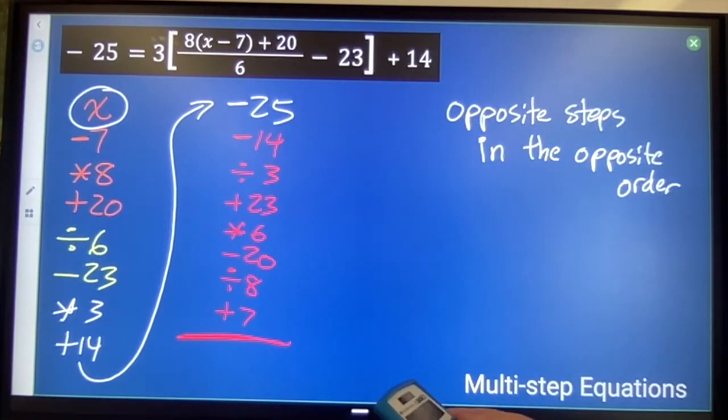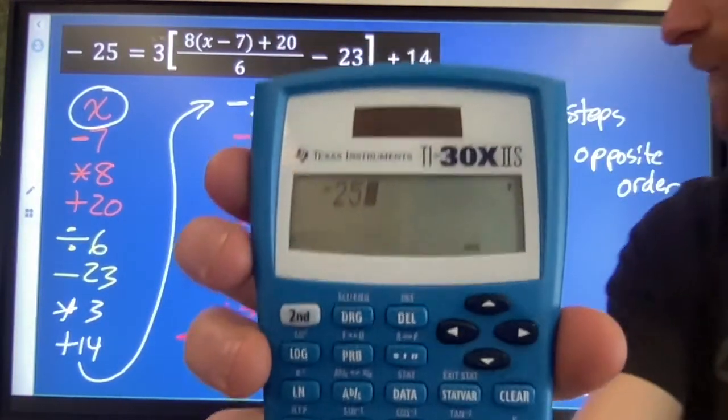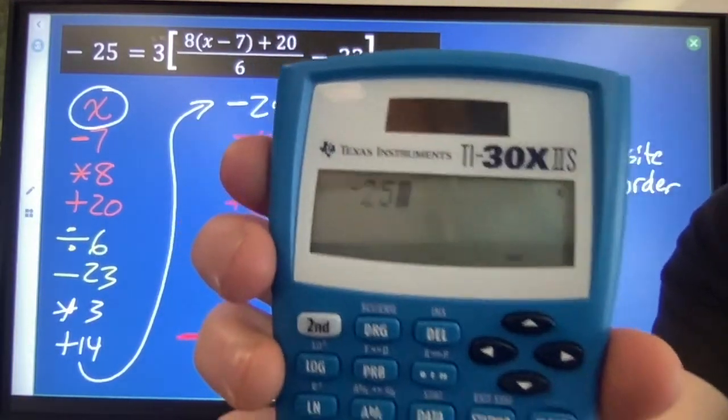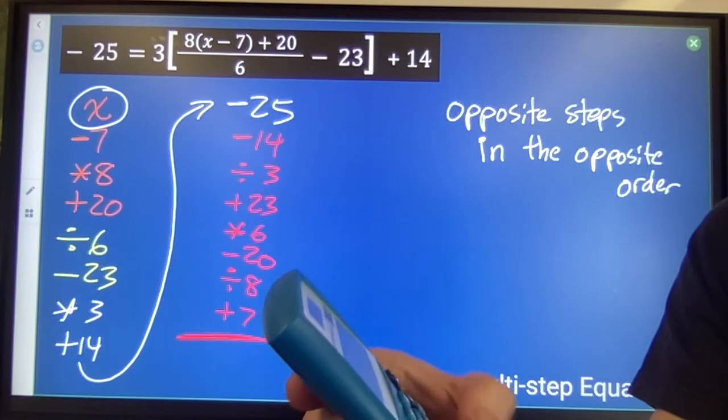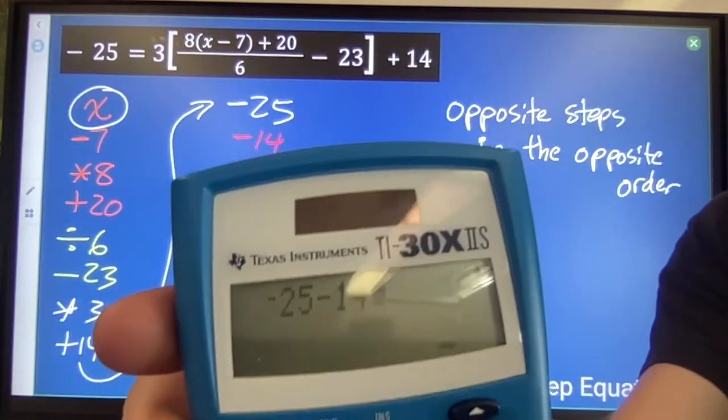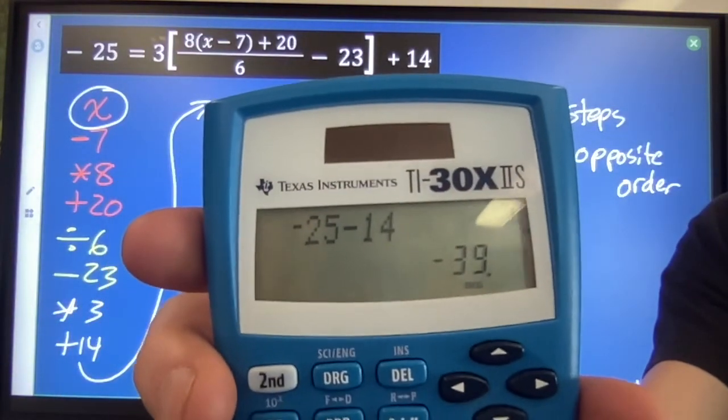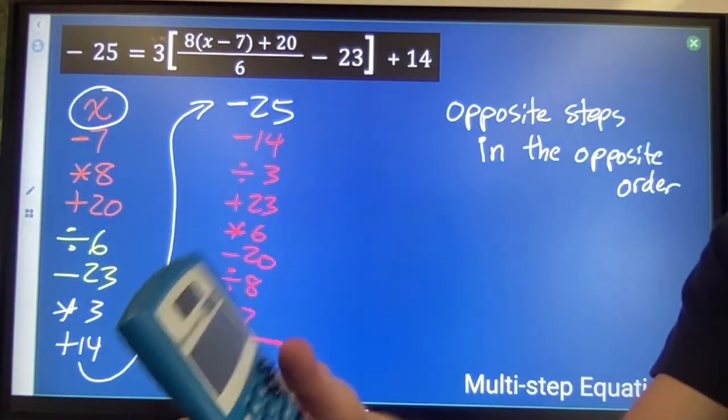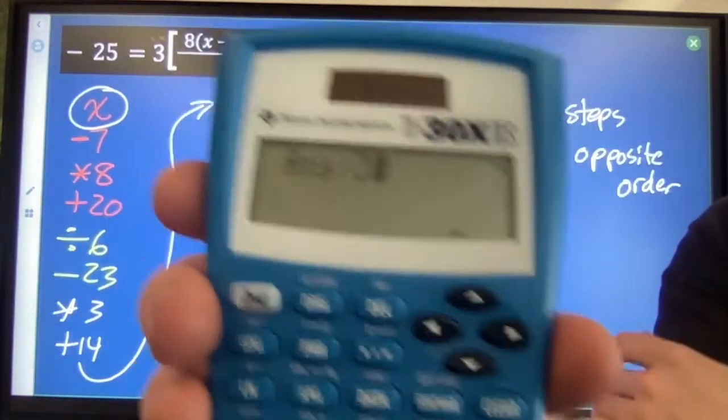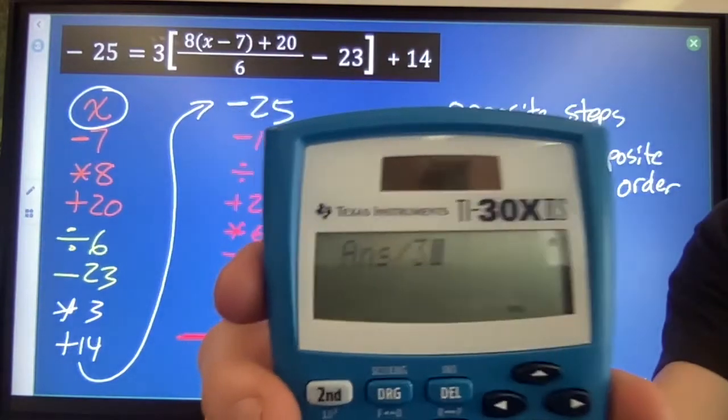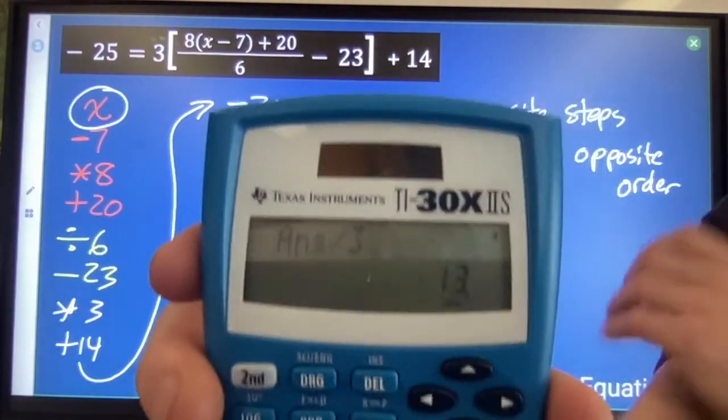The calculator's going to try to do order of operations. Starting at negative 25, you're going to hit minus 14, and then hit equals: negative 39. Then divide by 3. Answer divided by 3: negative 13.